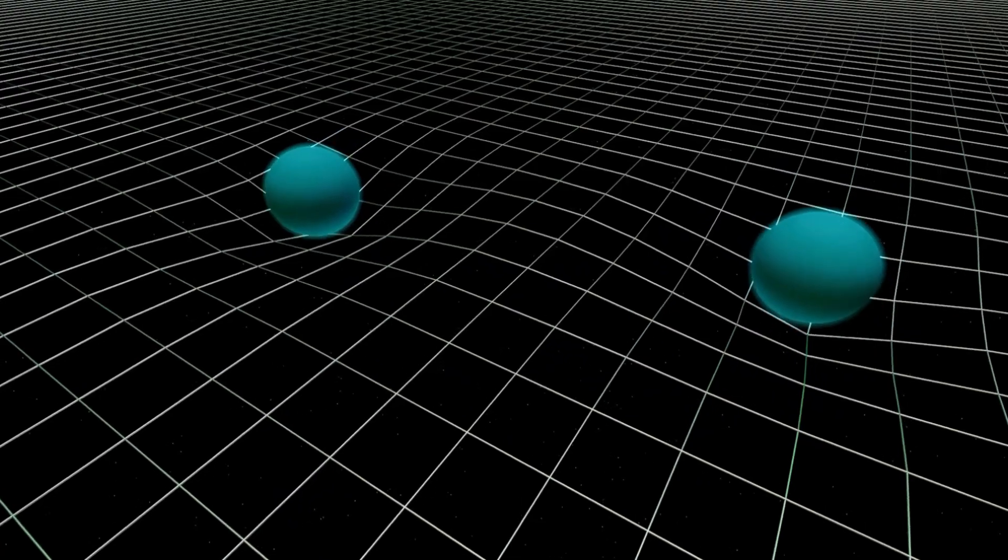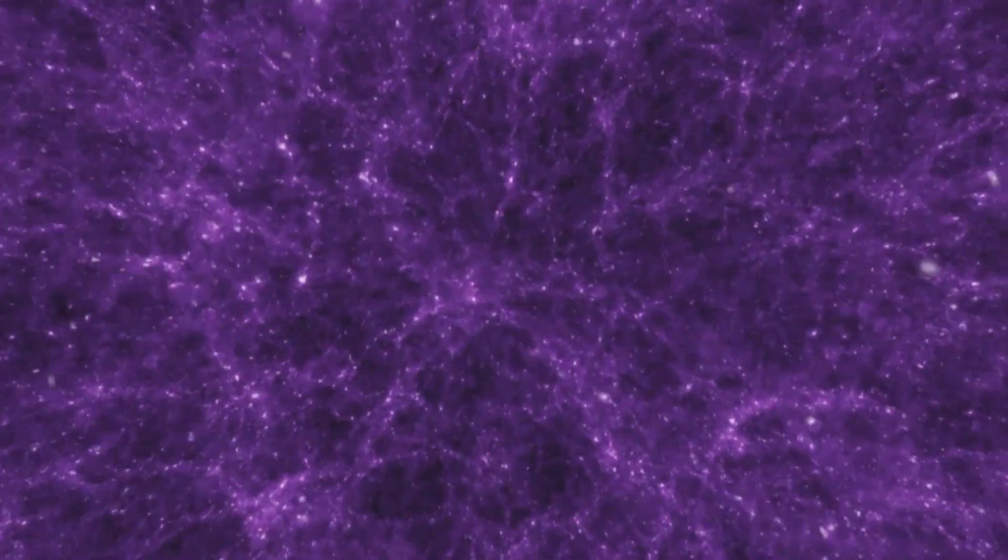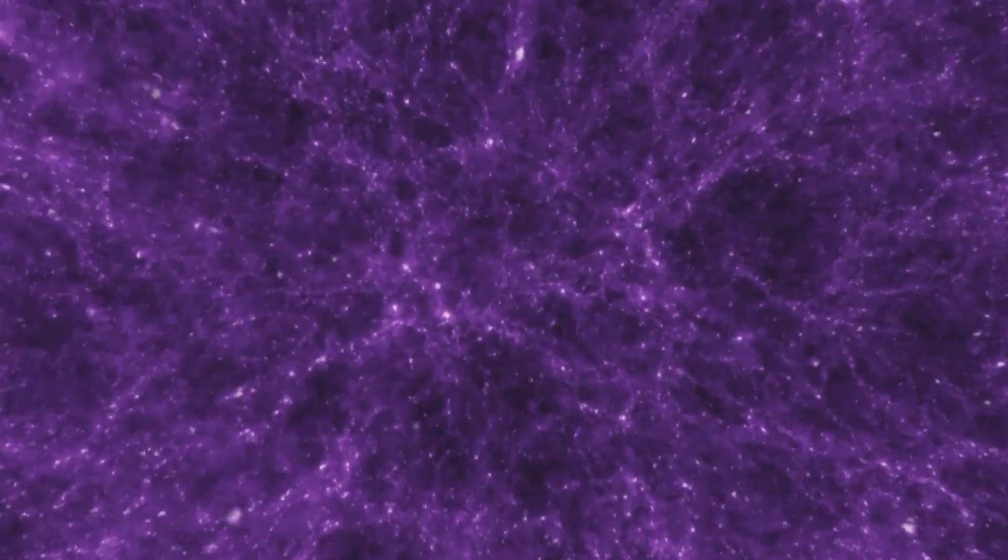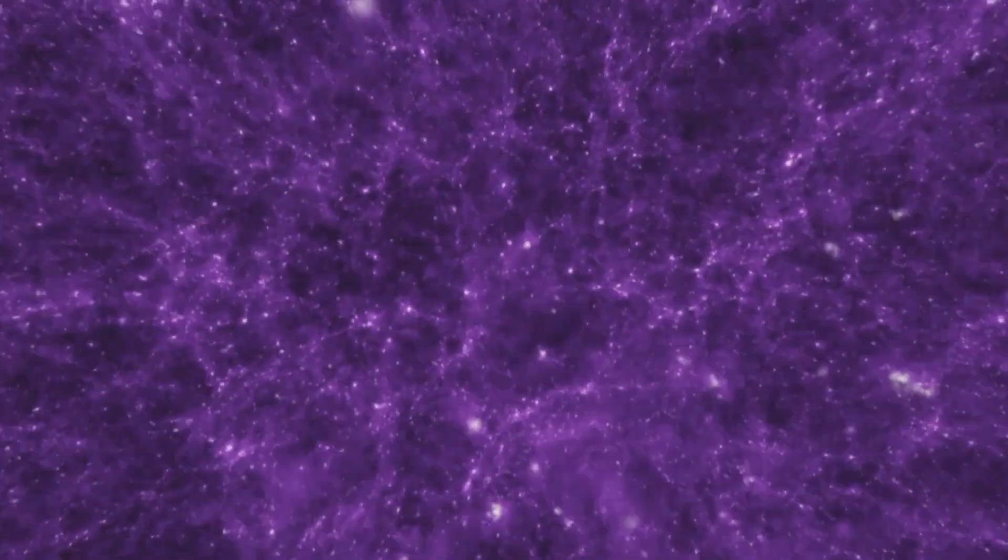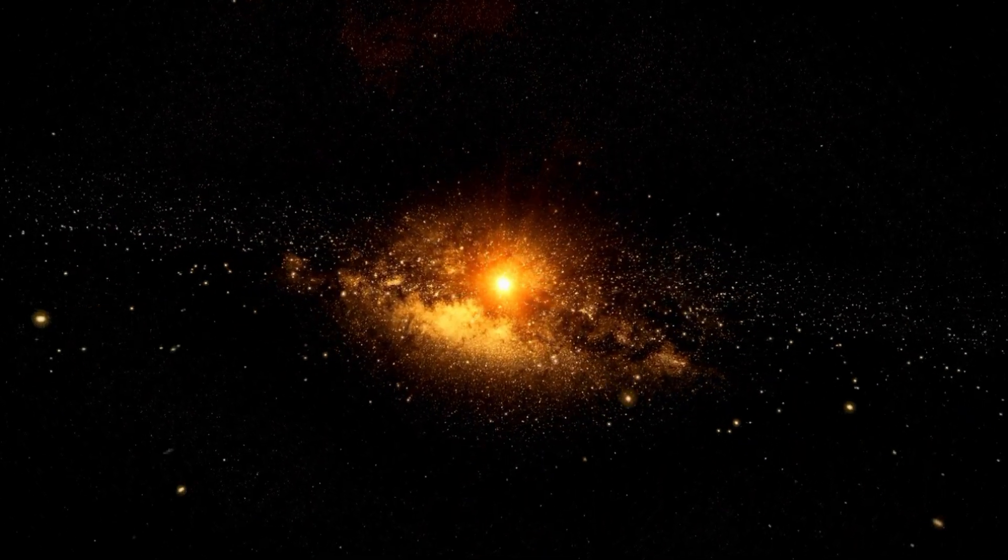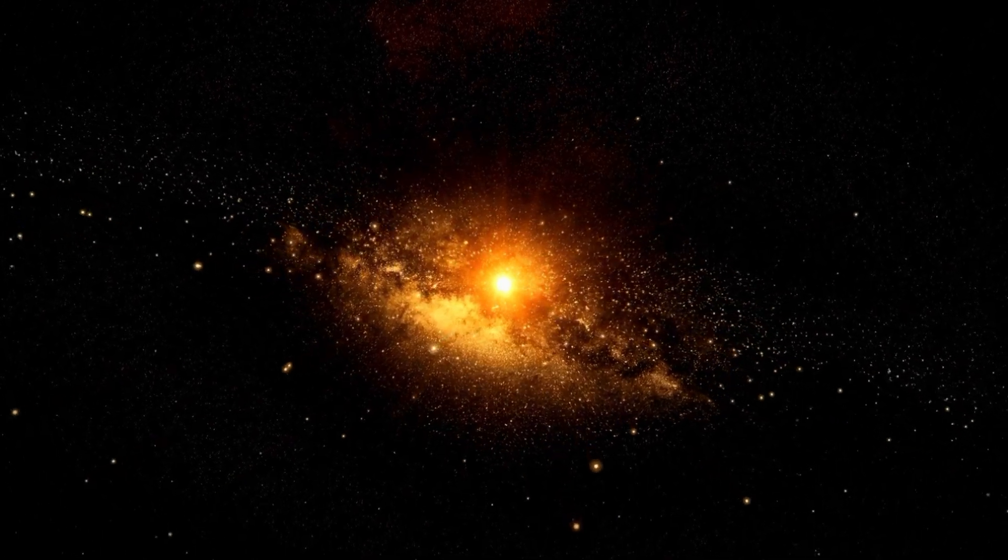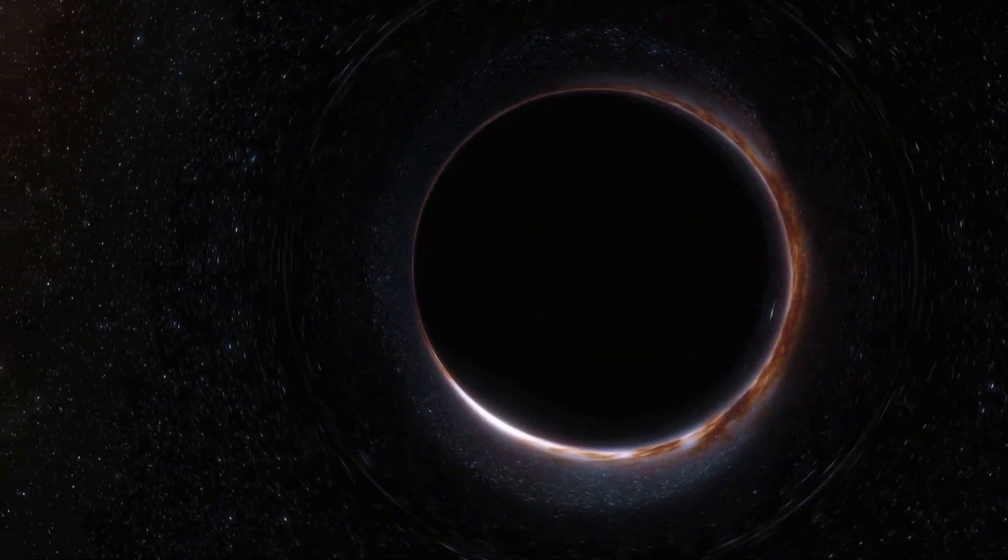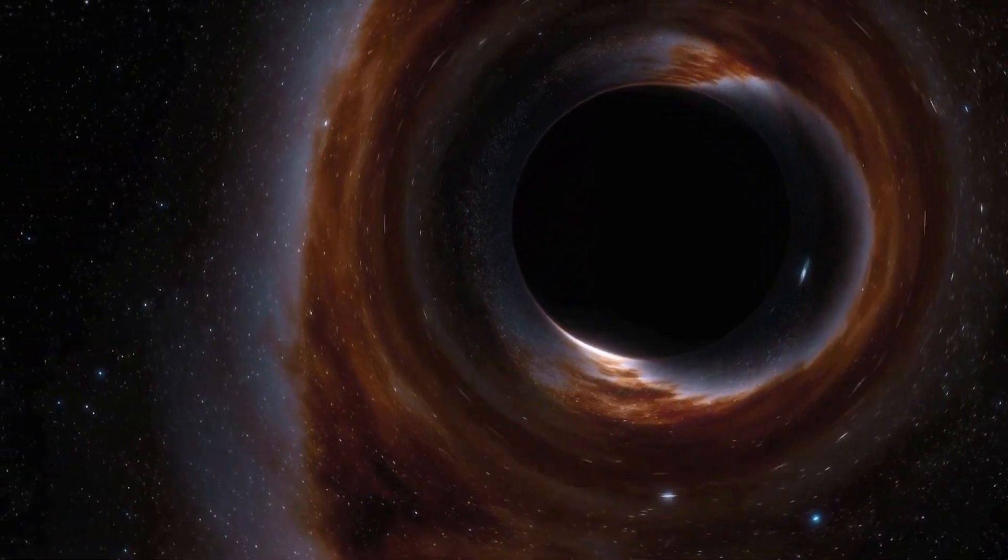How did they form? Some theories say that the early universe was not smooth and even, but had some regions that were denser and hotter than others. These regions could have collapsed under their own gravity and become black holes. The earlier they formed, the smaller they would be. The later they formed, the bigger they would be. So primordial black holes could have a wide range of masses, from much smaller than a paperclip to much larger than the sun.